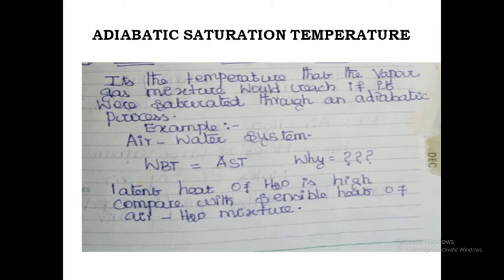Adiabatic saturation temperature is the temperature that the vapour-gas mixture would reach if it were saturated through an adiabatic process — that is, a process with no heat loss or gain. For an air-water system, WBT equals the adiabatic saturation temperature (AST). These two terms are practically the same because the latent heat of water is high compared with the sensible heat of the air-water mixture.